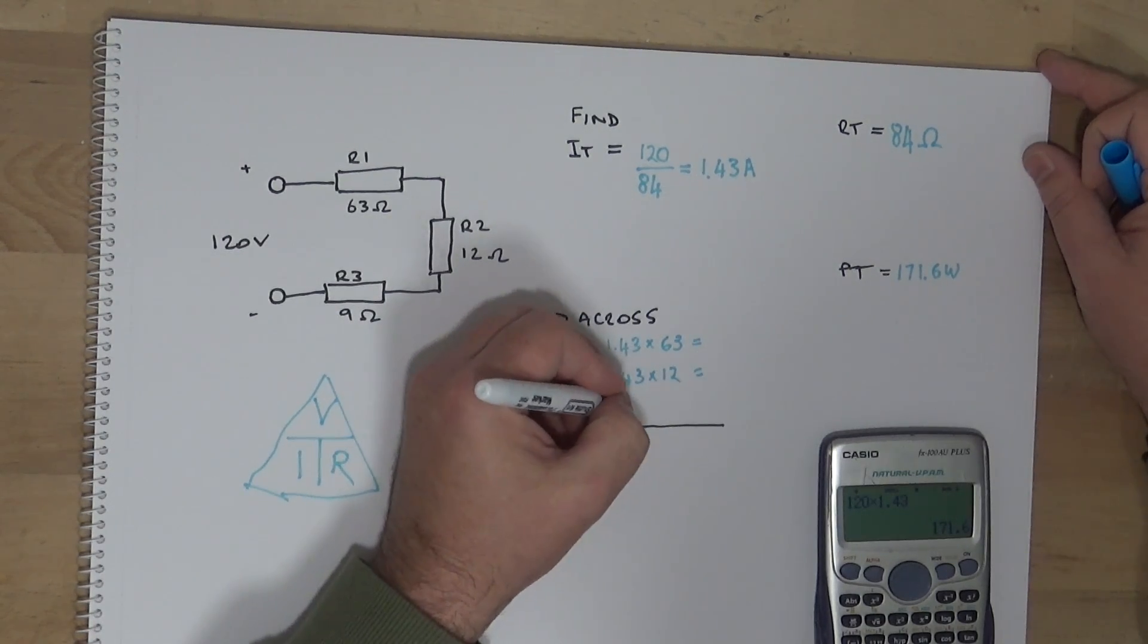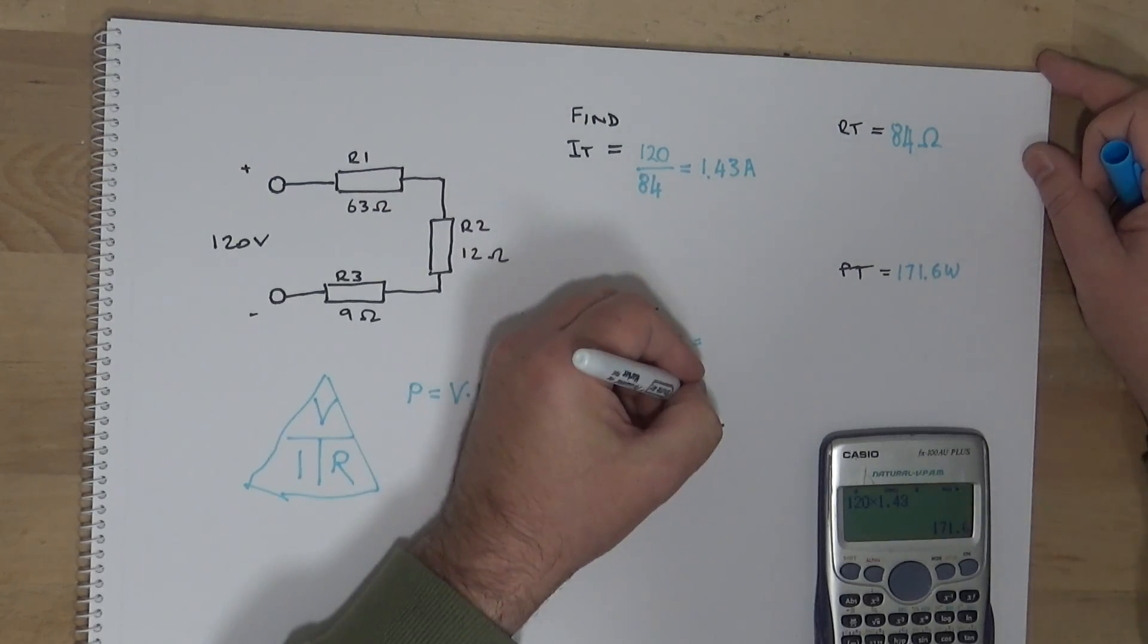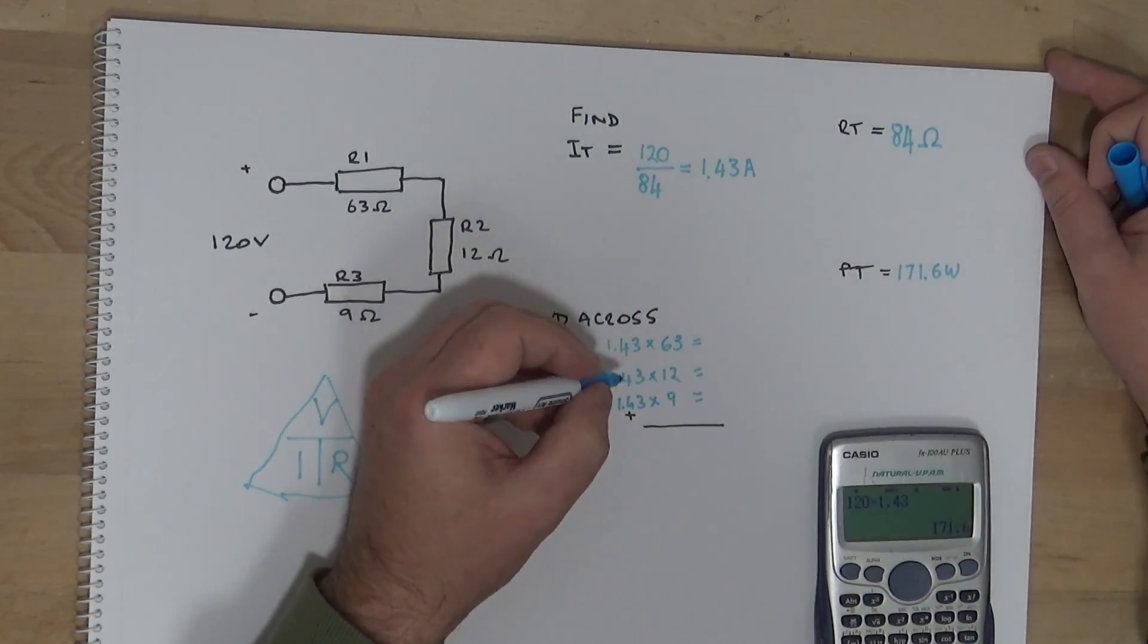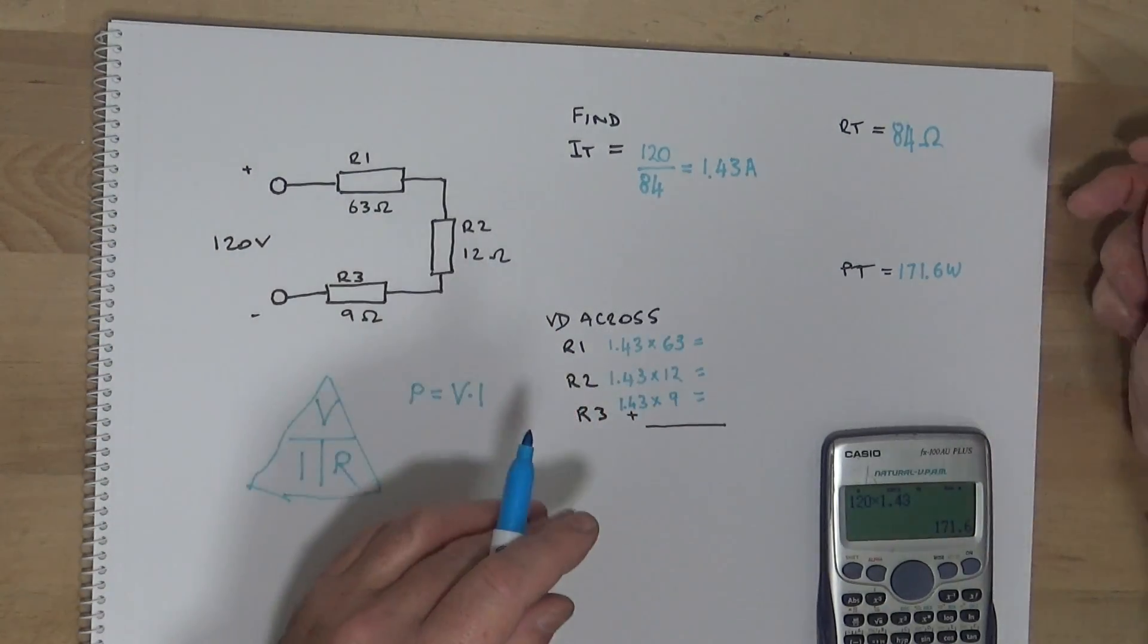R3 is going to be again the same 1.43 multiplied by 9 equals 1.43. And we'll get the total of all those. And the total should be 120 or near on.